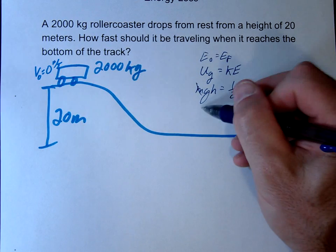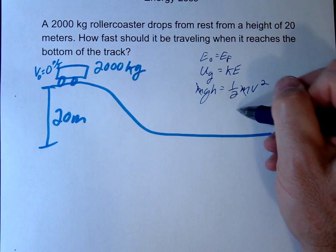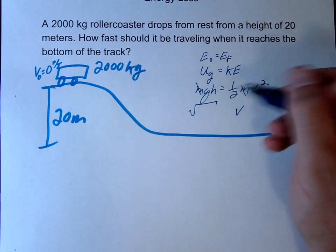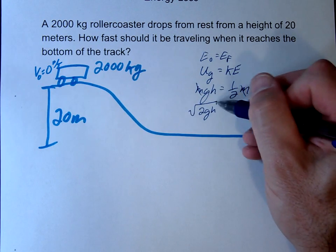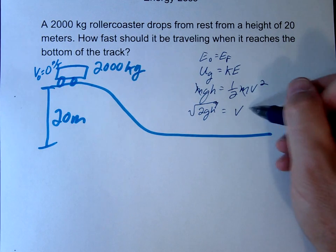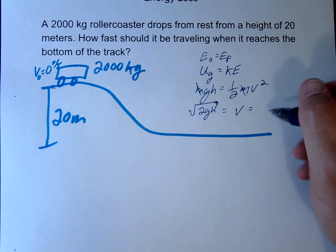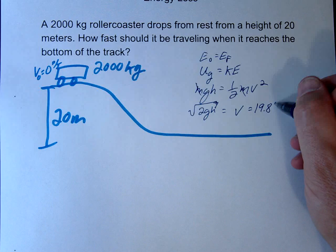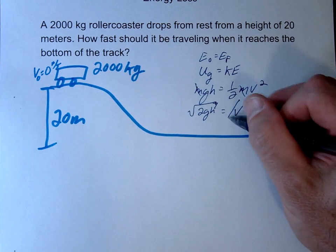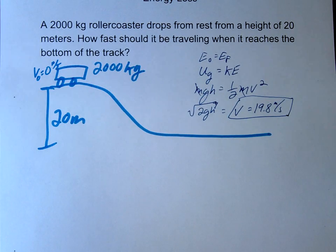And we're just going to go ahead and solve it. So V would be equal to the square root of 2GH. When you do the math, you get 19.8 meters per second.